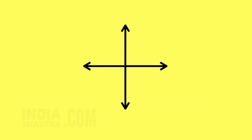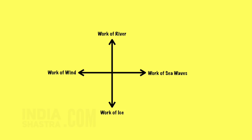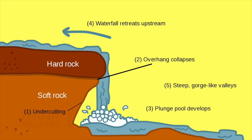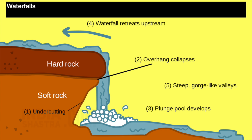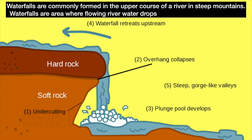In this video, we will cover four agents: the work of river, work of sea waves, work of ice, and work of winds. River starts its journey in the mountains and gets deposited in the seas. In this journey from mountains to seas, rivers make several types of landscapes. When flowing river water drops abruptly and nearly vertically, as you can see in this video, it is called a waterfall.